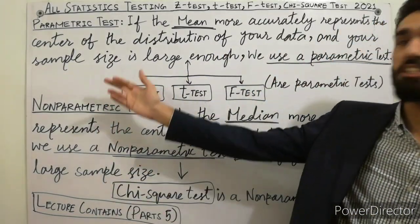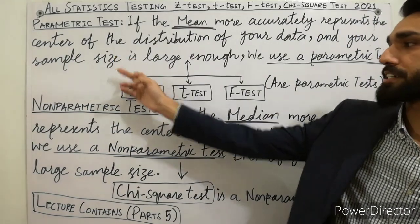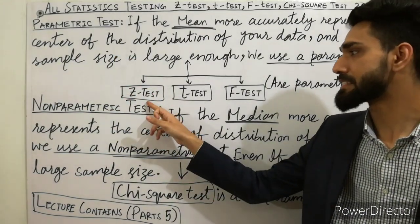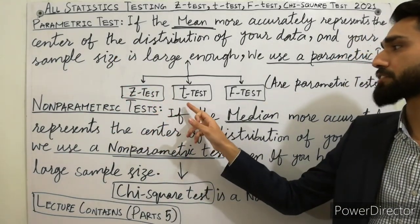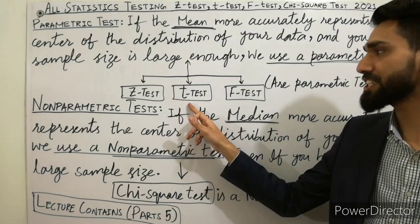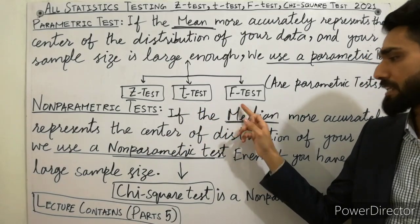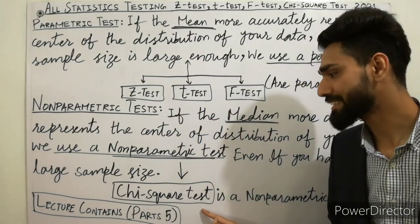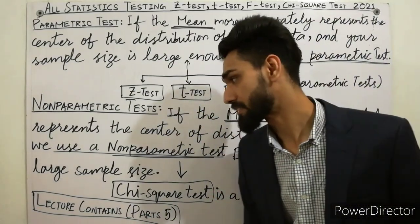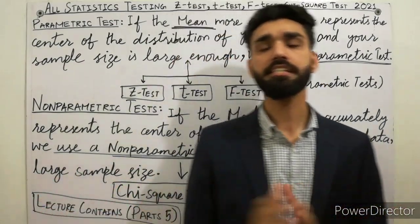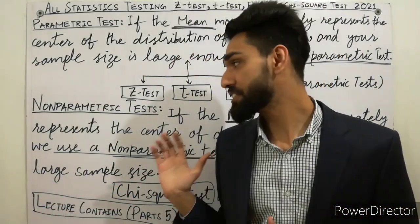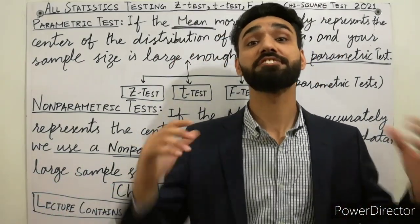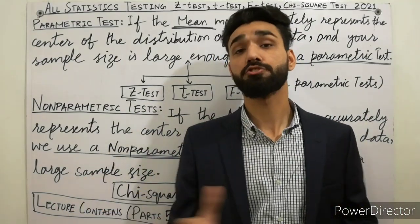I will discuss: part 1 — parametric and non-parametric test; part 2 — Z test; part 3 — T test; part 4 — F test; and last, chi-square test. I will discuss each part with secrets and tricks which nobody knows about.